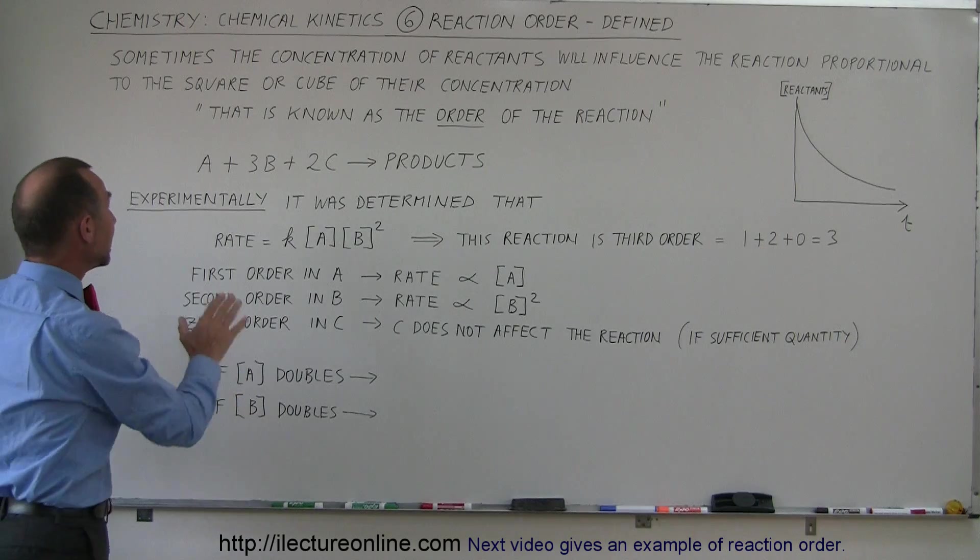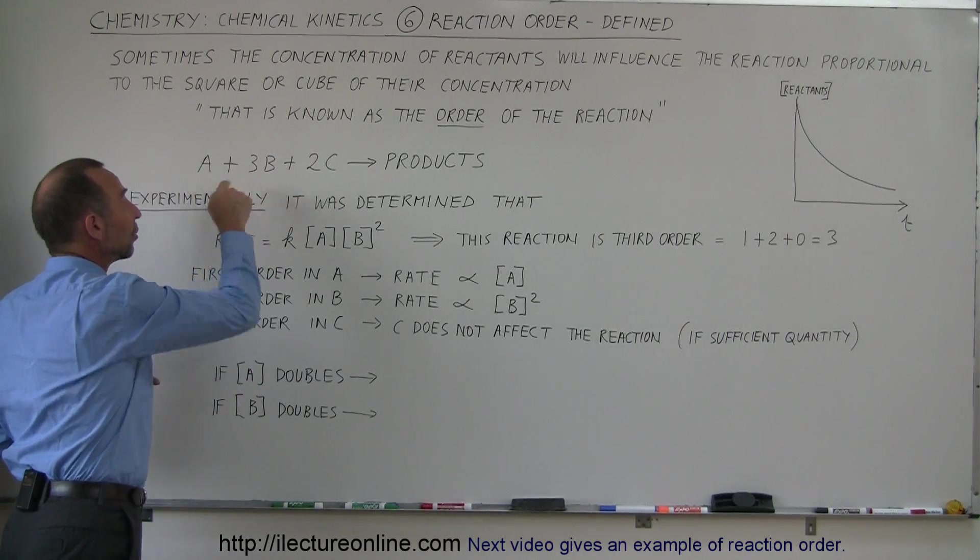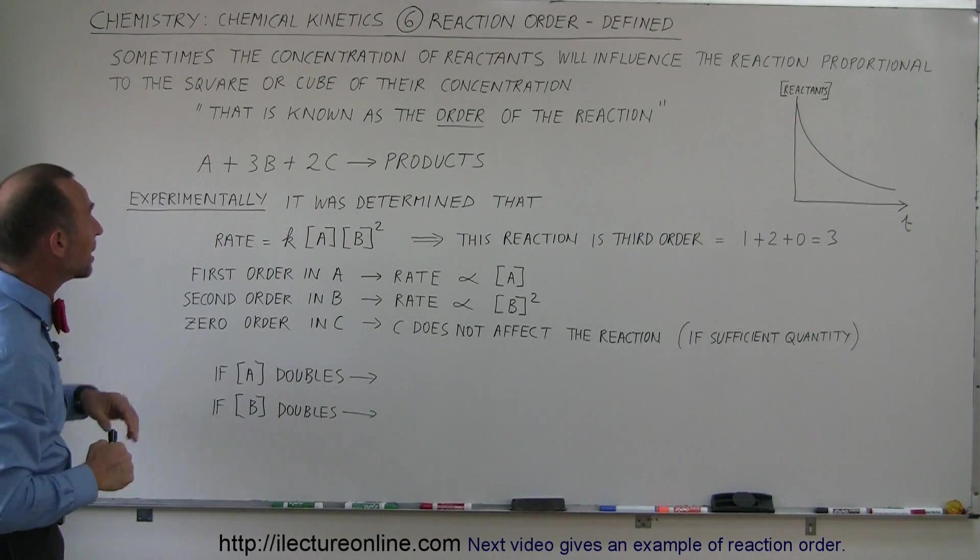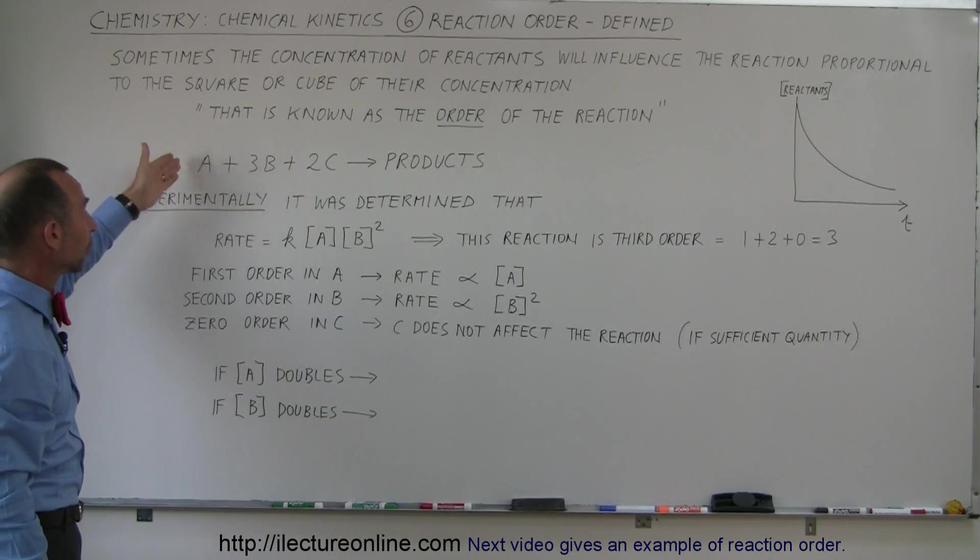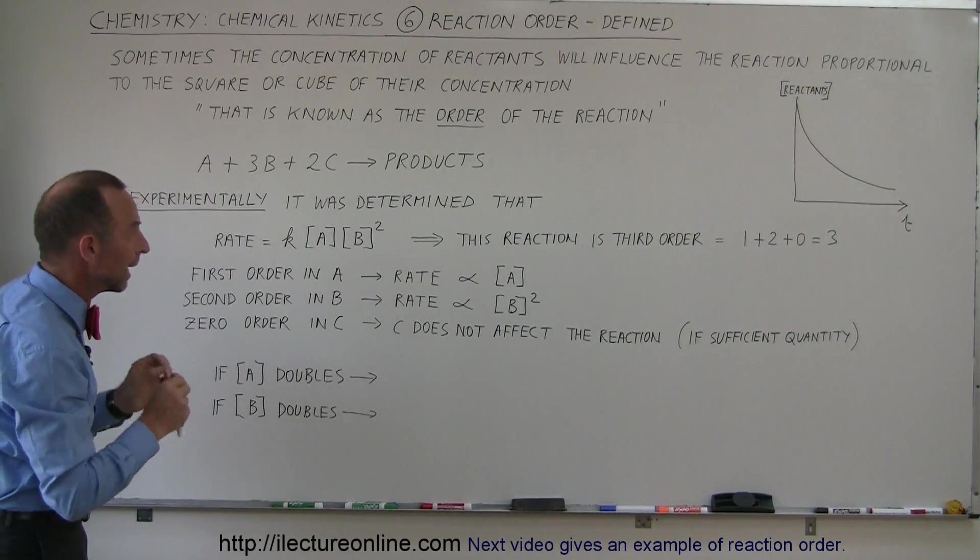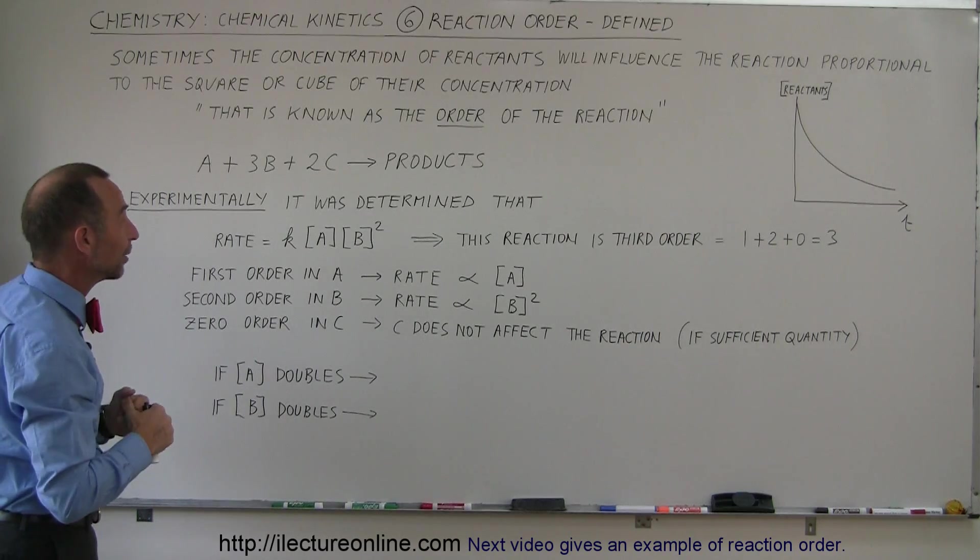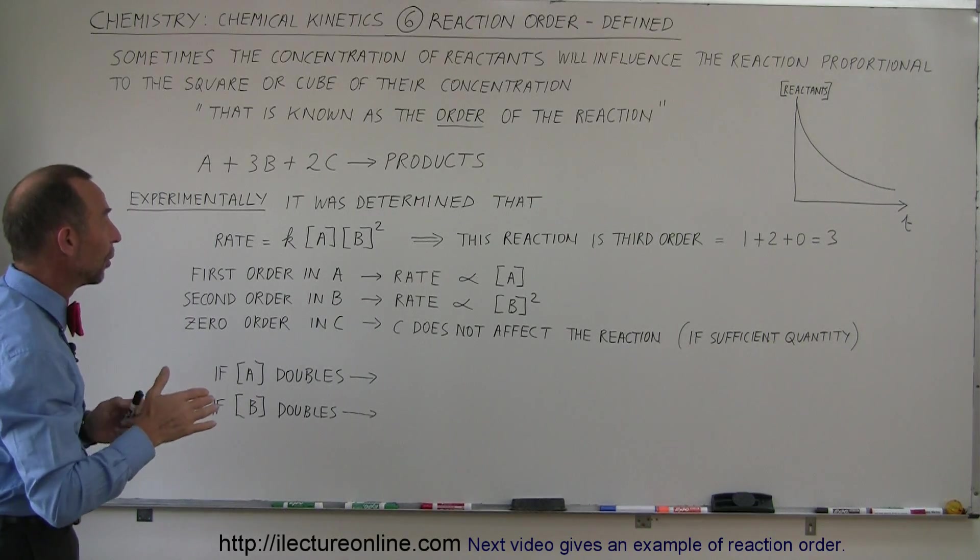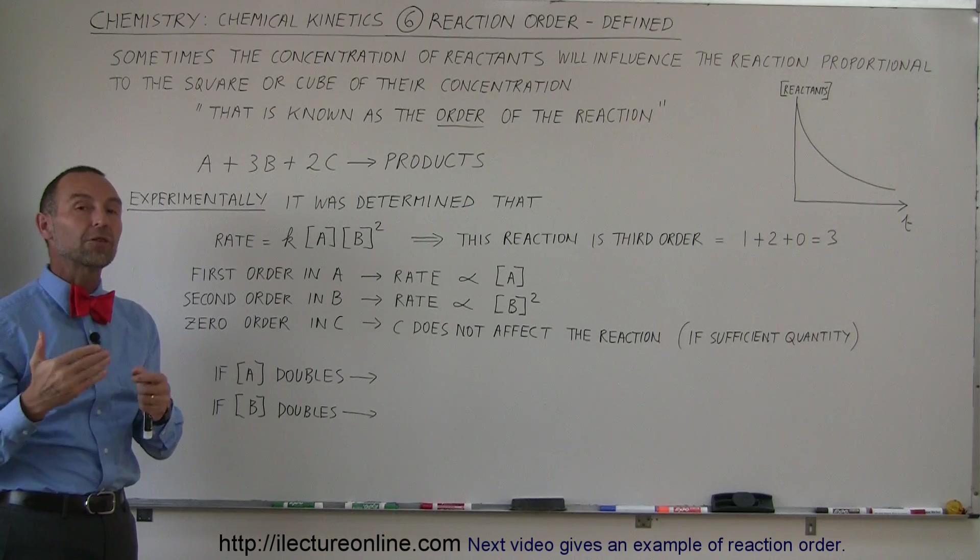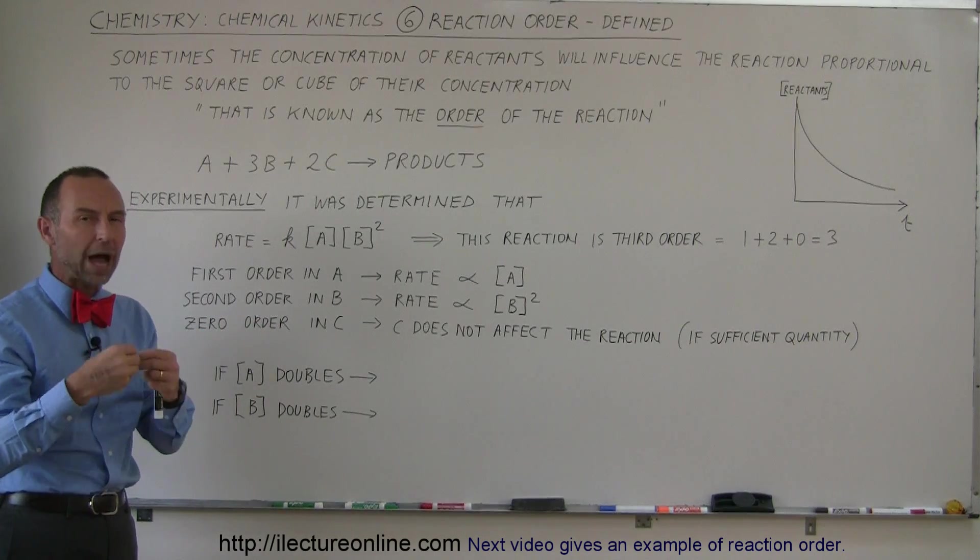Now it turns out that the order is not related to these coefficients in front of the reactants. For example the coefficients simply represent how many moles you need of each reactant, and that's not necessarily and quite often not remotely related to the order. So how do we determine the orders? Well most of the time it's done experimentally and in some future videos I will show you how we do that.